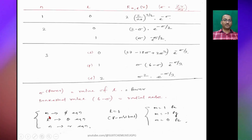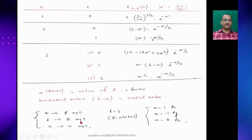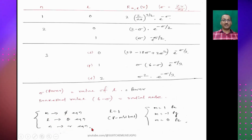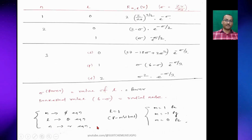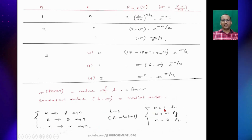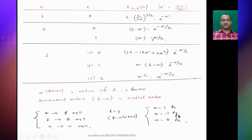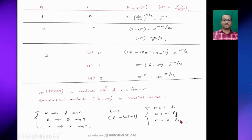Here m represents the φ equation, l represents the θ equation, and n represents the R equation. For p orbitals, l = 1, so m = +1 corresponds to pₓ, m = −1 corresponds to p_y, and m = 0 corresponds to p_z.